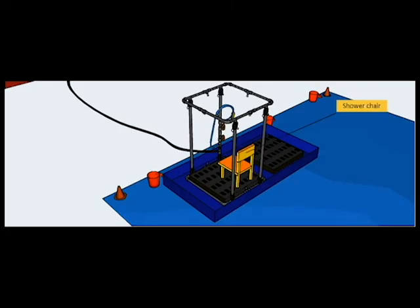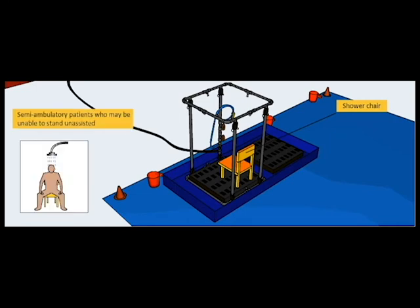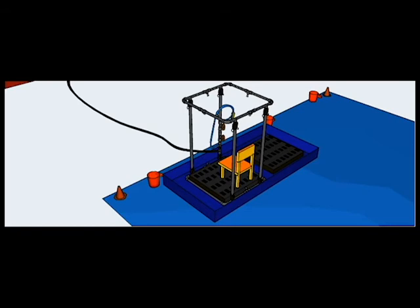A shower chair may be added for semi-ambulatory patients who are unable to stand unassisted throughout the showering process. Position the chair so that the patient can enter and exit the system safely and the operations team has access on two sides.